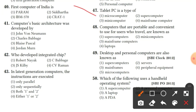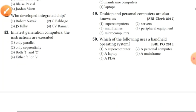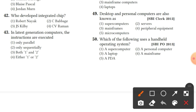Question 47: tablet PC is the type of microcomputer. Option 1 is the right answer. Question 48: computers that are portable and convenient for users who travel are known as laptops. Question 49: desktop and personal computers are also known as microcomputers. Option 5 is the right answer.